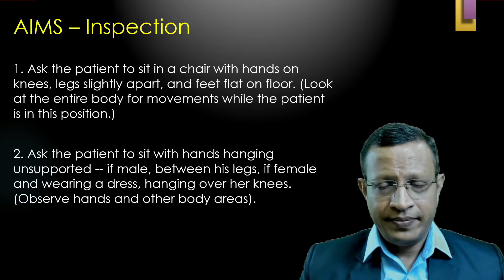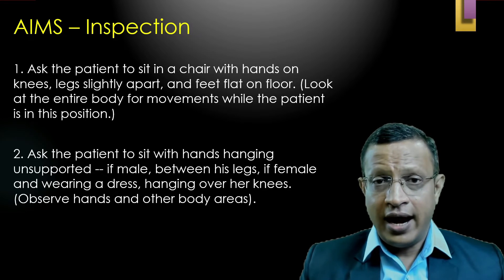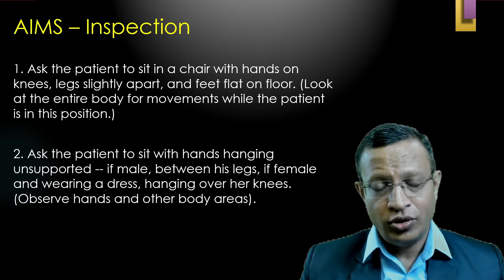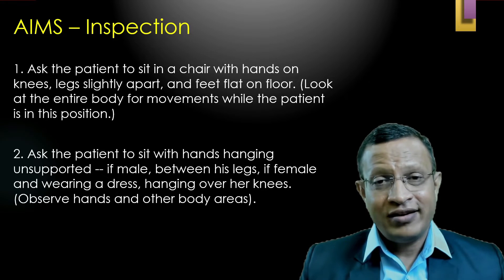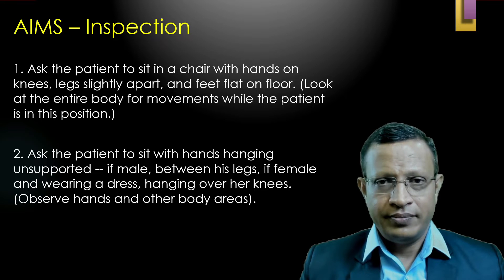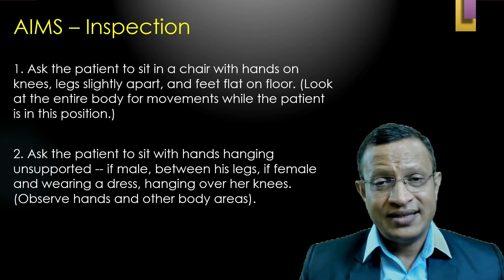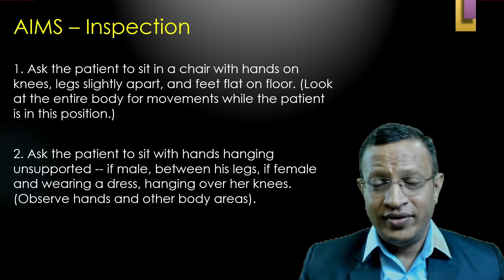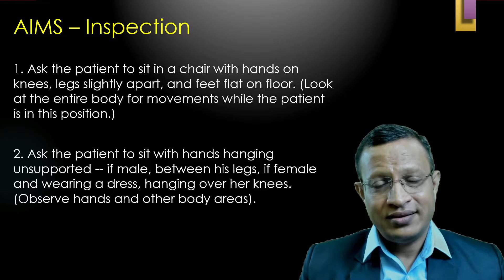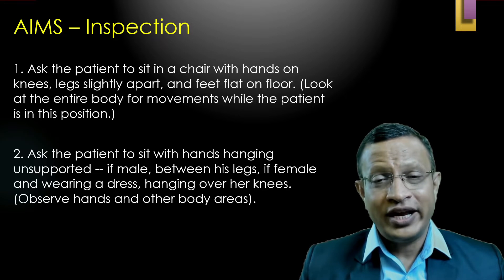Request the patient to sit comfortably with legs slightly apart and both feet flat on the floor. Remember to ask him to remove shoes and socks if still wearing them. In step one, the patient keeps his hands resting on his thighs, and you observe for any movements from head to toe. In step two, request the patient to sit with hands hanging unsupported — if male, hanging between his legs; if female, hanging over both sides of the knees. Again, observe from head to toe for any abnormal movements.